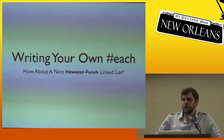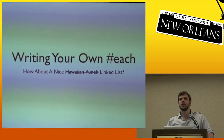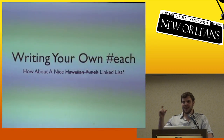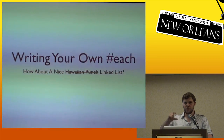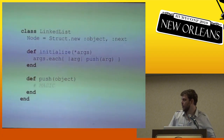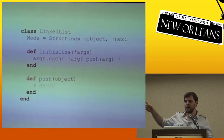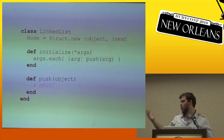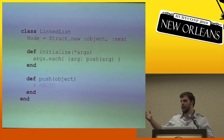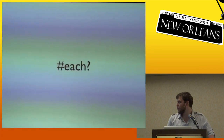A linked list is a collection class that uses objects that have a pointer to the next object. You start with the first object, then traverse those pointers to get to each next object until you run out. We can write a linked list in Ruby by using a struct to represent each object in the collection. That struct has a pointer to the next object and a container for the thing it represents. We initialize a list by pushing all arguments onto the list.